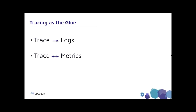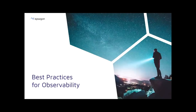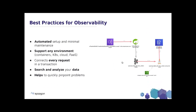Distributed tracing really becomes the glue that allows you to stitch together the context of what, where, when, and why something is negatively impacting your production or pre-production environments. This allows you to take out not only the guesswork, but the hours of manual toil that can be spent troubleshooting. Let's talk about some of the best practices around general observability strategies. Observability really should be top of mind for every organization by now, but it should not come at the expense of the business or developer velocity and efficiencies.